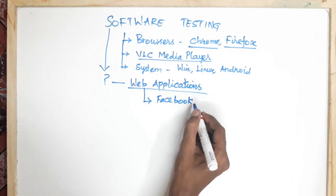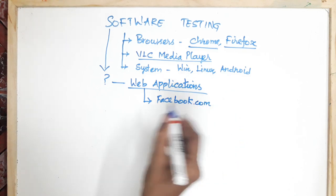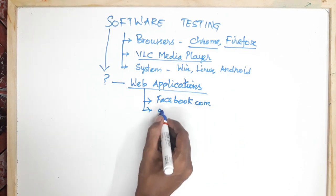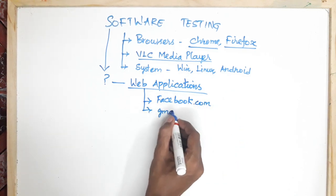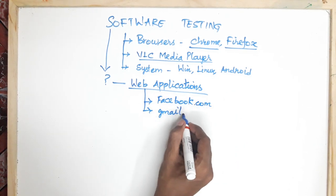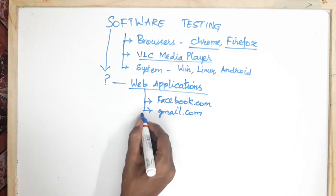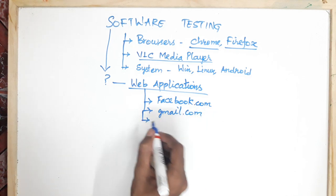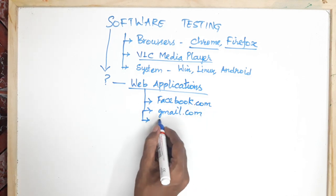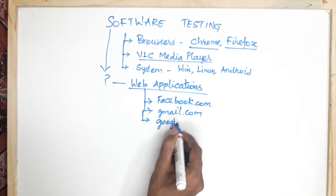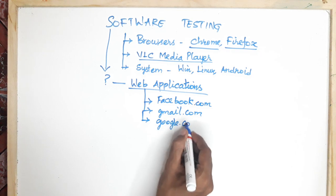Facebook.com — type it in the browser. Gmail.com or Google.com. If we install the website, we will be able to use the web applications.